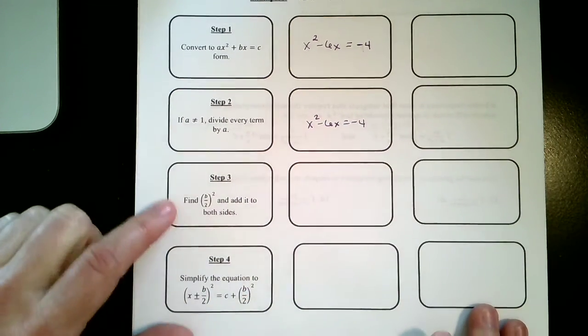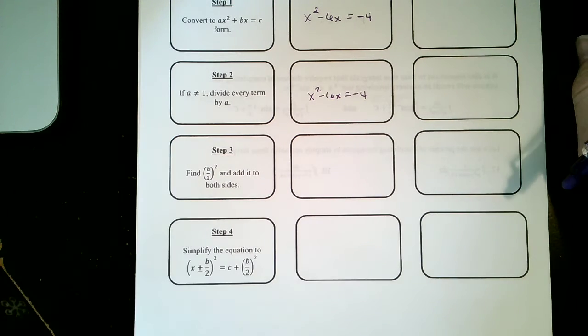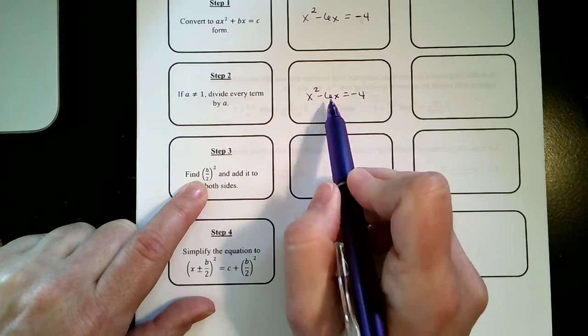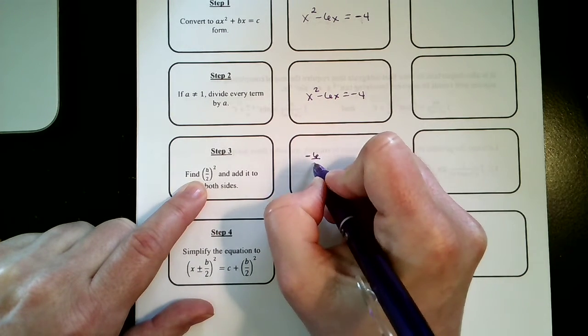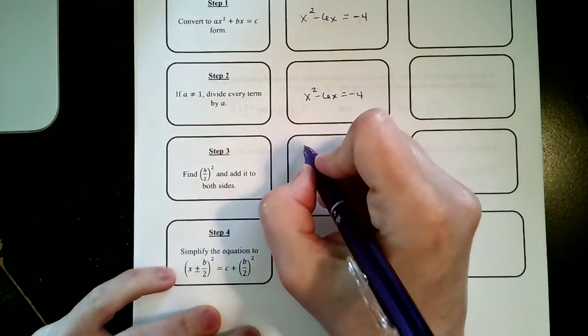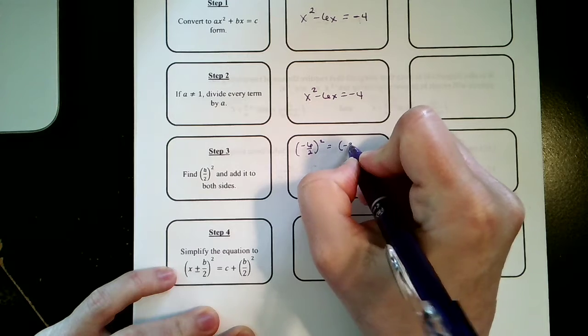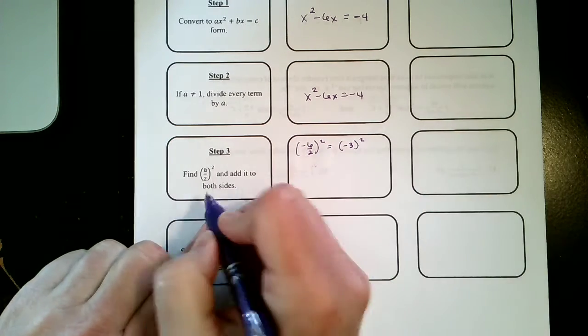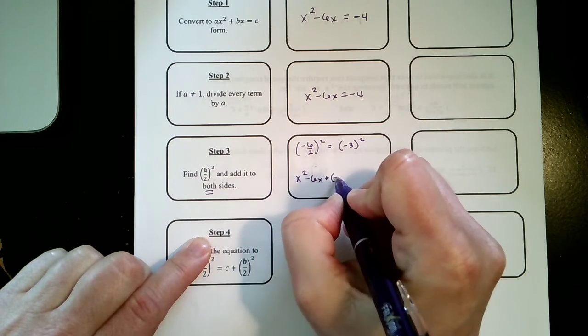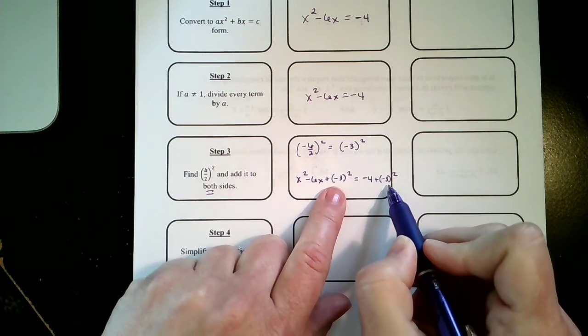The next thing we want to do is we want to take our b term and divide it by 2. So our b term is -6. I'm going to take -6 divided by 2 and then I want to square it. So that actually equals (-3)² and I'm not going to make that 9 just yet. I need to add it to both sides: x² - 6x + (-3)² = -4 + (-3)². I have to add it to both sides to keep the equation balanced.